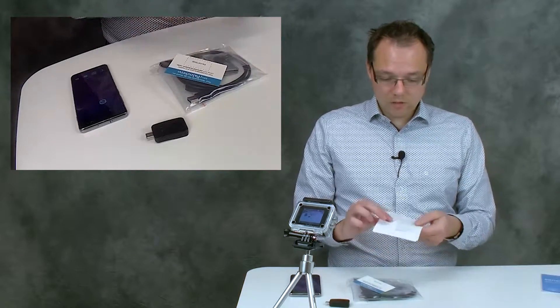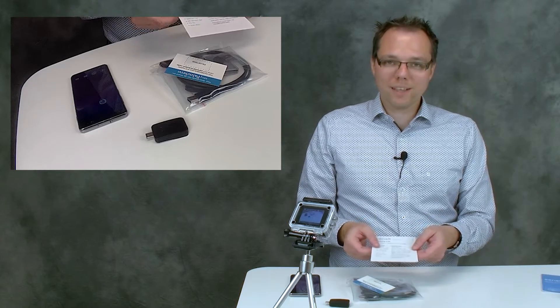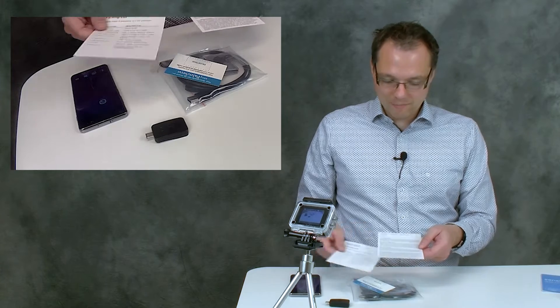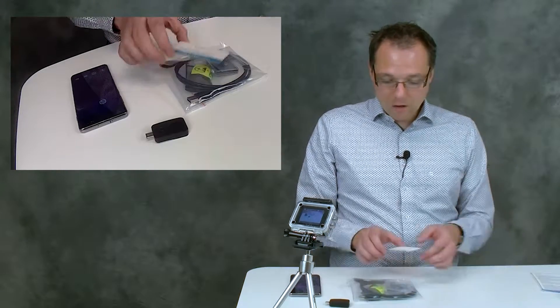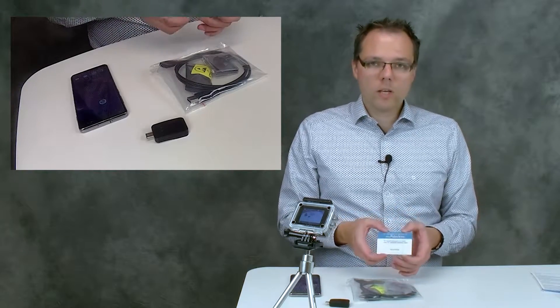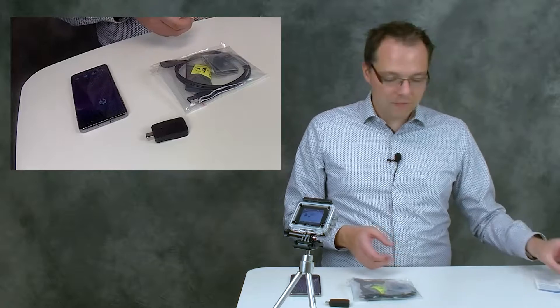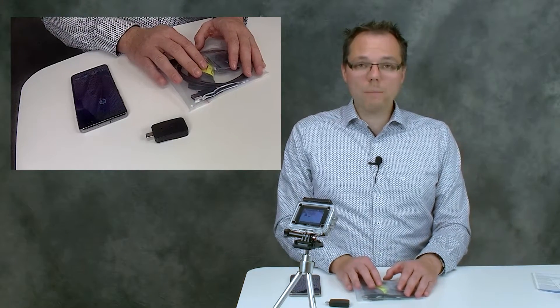If you're really into reading, you can also read the list of contents of the package—what should be in there—and your warranty terms and conditions. Also, you find in there an activation code. You can use that for downloading the software PS Trace, for example, on our website.